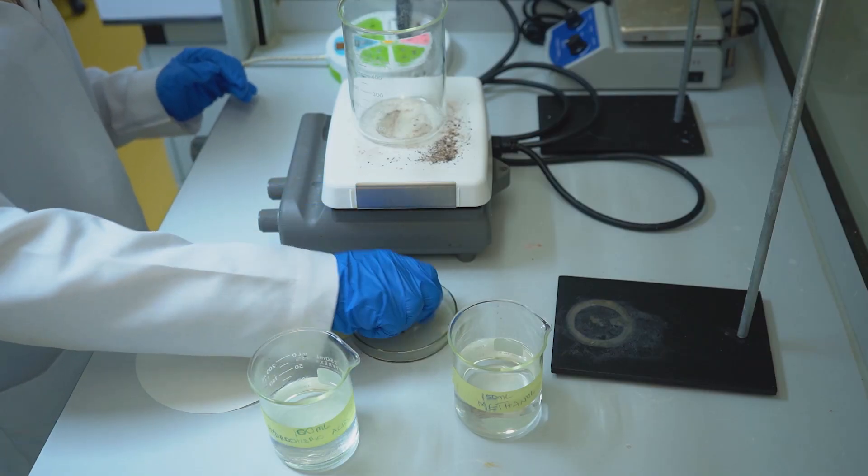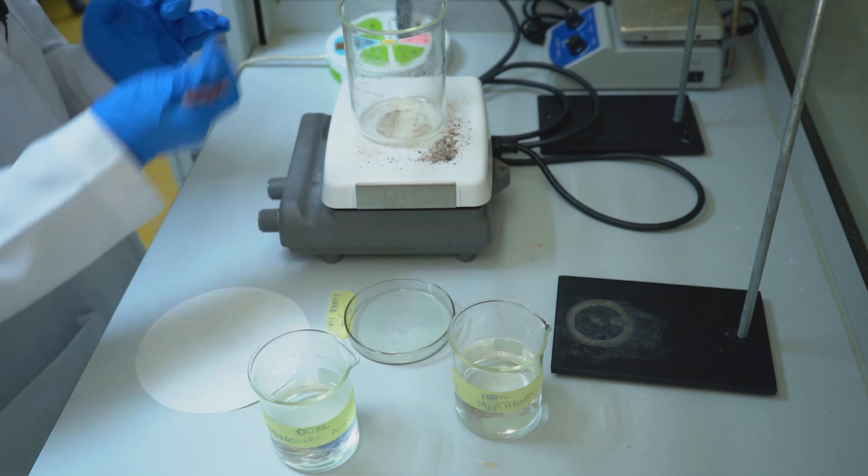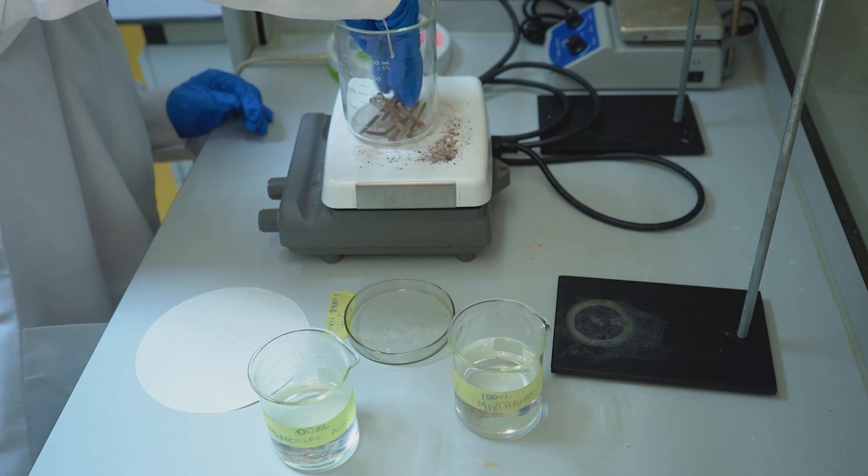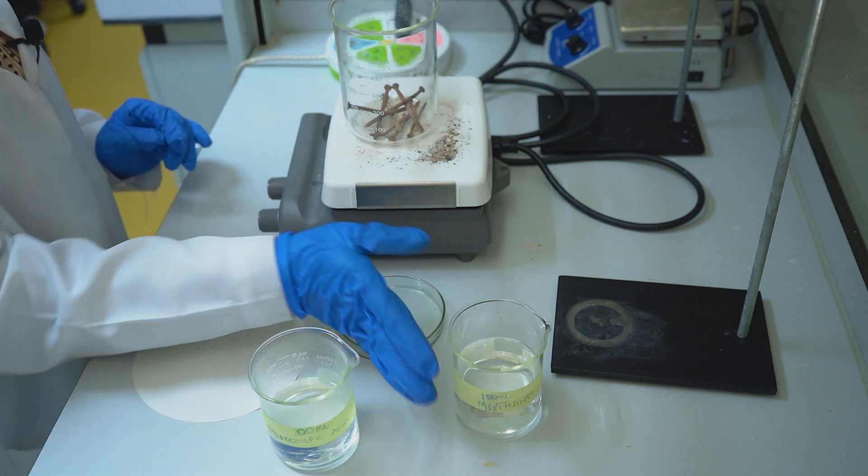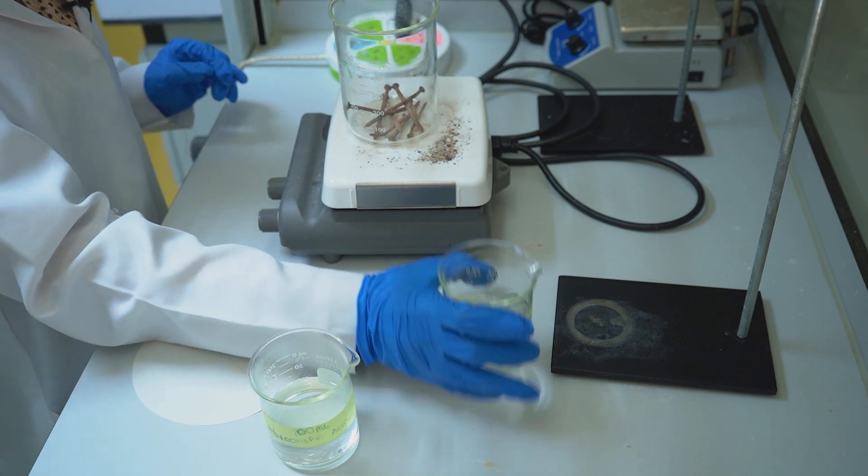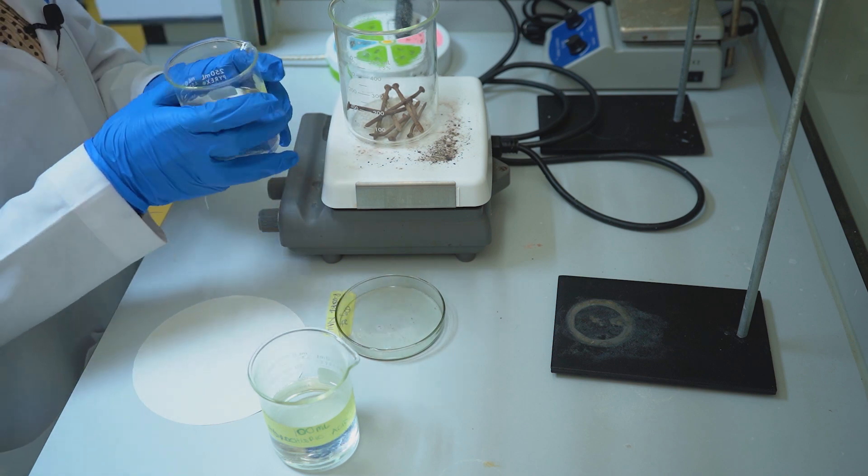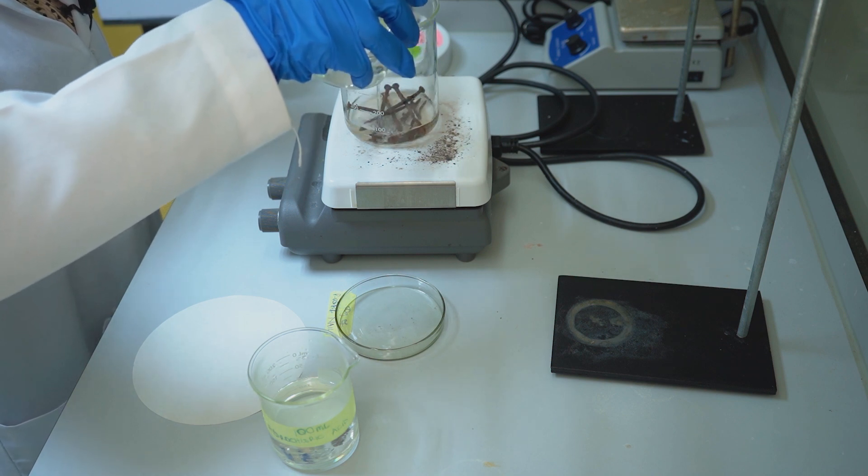Transfer the 50 grams of rusted nails into a clean 600 ml beaker. These are 150 ml methanol, carefully add it to the rusted nails.